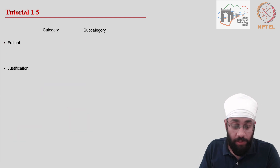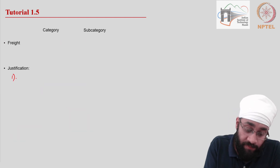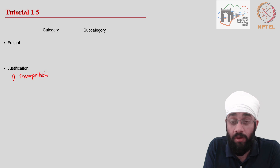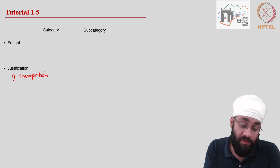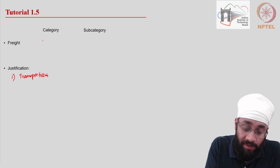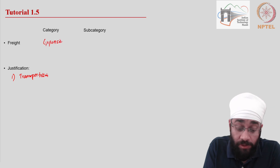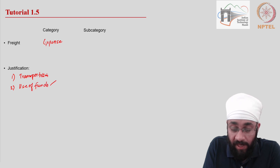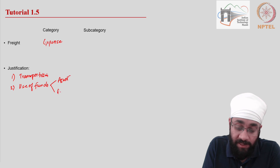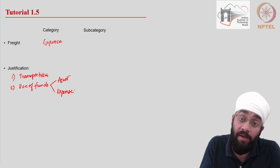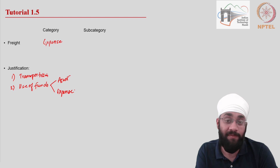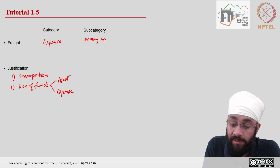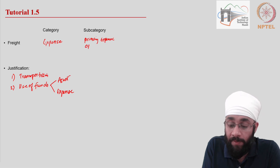Freight is transportation cost — you transport your goods from the factory to the retail outlet or wholesaler. This is clearly an expense and a use of funds. It is not an asset; you pay for transportation, use it, and it is gone. It is an operating expense.